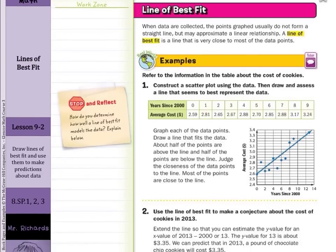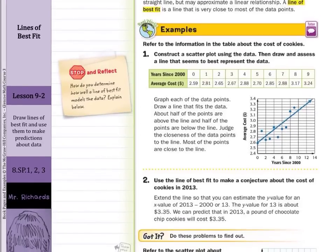As we continue on, use the line of best fit to make a conjecture about the cost of cookies in 2013. We're going to extend the line so that you can estimate the y value for an x value of 2013. Now that's going to be 2013 minus 2000 to get us the 13 years since 2000. When we look up our line extended, look up from the 13, and you get about $3.35.